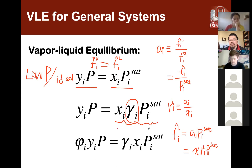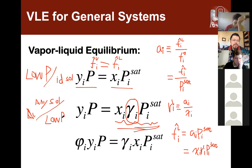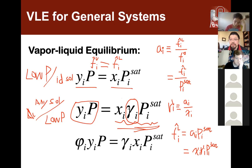For the truly general case at any pressure and any solution, we treat both liquid and vapor as the general case. For the vapor phase, the fugacity is the fugacity coefficient phi_i_hat times Yi times P. So the general equation for fugacity in the vapor mixture is always phi_i_hat · Yi · P.